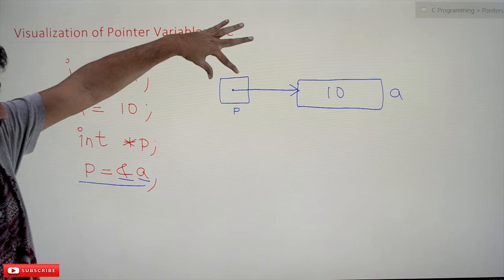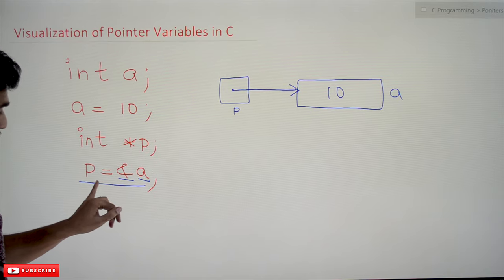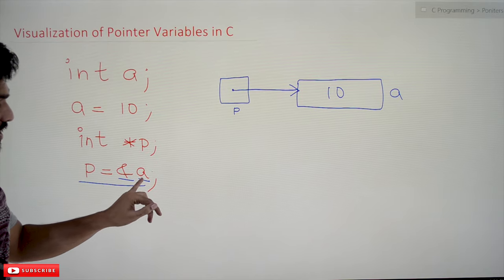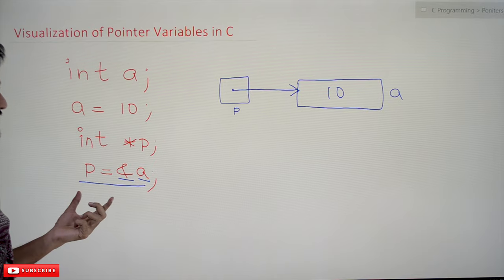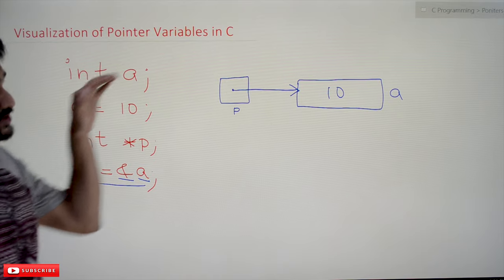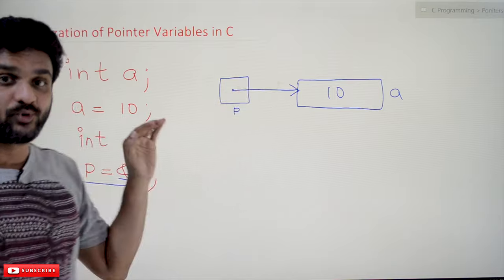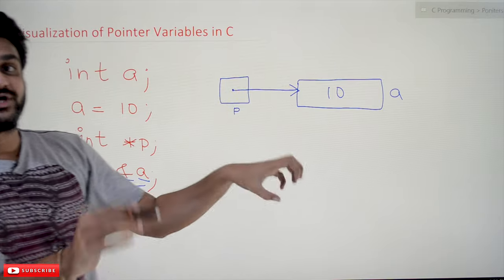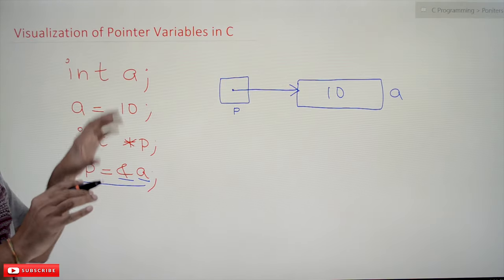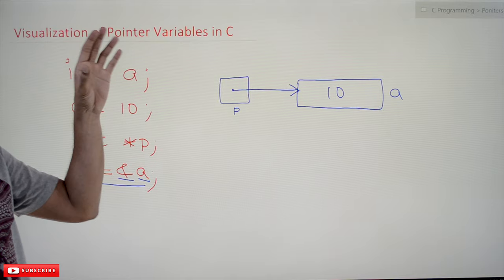By assigning the value to the pointer variable, we are going to point to that memory location. This is the way in which we can visualize our pointer variables.